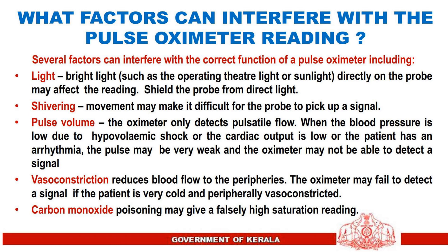Several factors can interfere with the correct function of a pulse oximeter. Bright light such as operating theater lights or sunlight directly on the probe may affect the reading — shield the probe from direct light. Shivering or movement may make it difficult for the probe to pick up a signal. Pulse volume: the oximeter only detects pulsatile flow — when blood pressure is low due to hypovolemic shock, low cardiac output, or arrhythmia, the pulse may be too weak to detect. Vasoconstriction reduces blood flow to the peripheries, and the oximeter may fail to detect a signal if the patient is very cold. Carbon monoxide poisoning may give a falsely high saturation reading.